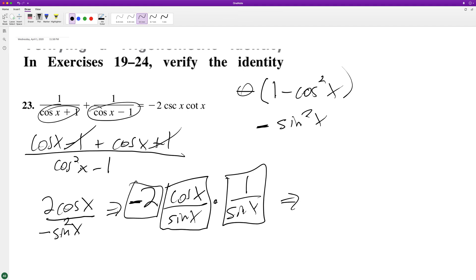So that gives us our negative 2. And I'll just rearrange it so it matches up there. The cosecant here, cosecant x, and then our cotangent x.